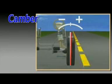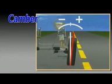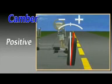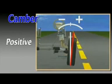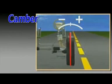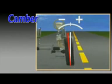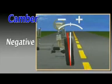A wheel that tilts outward at the top has positive camber. A wheel that tilts inward at the top has negative camber.